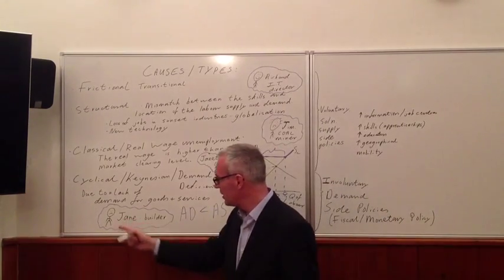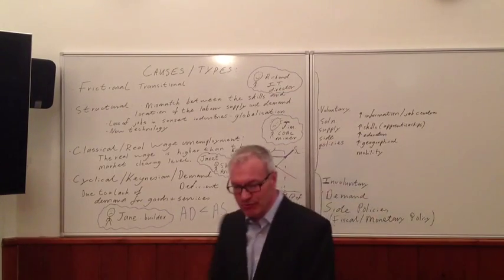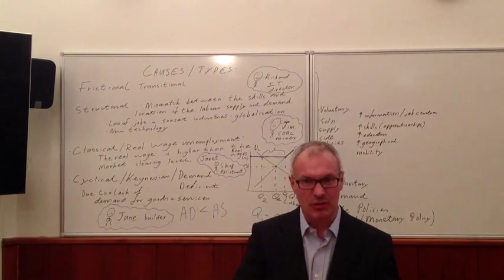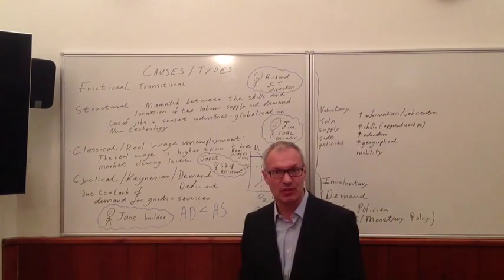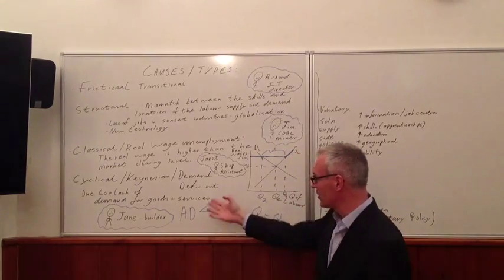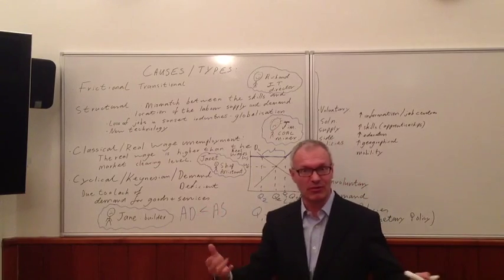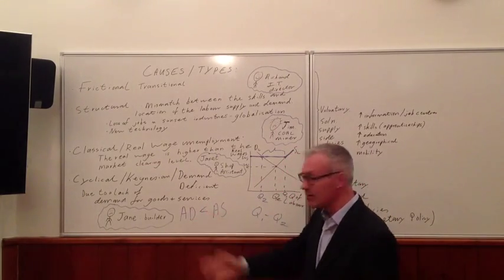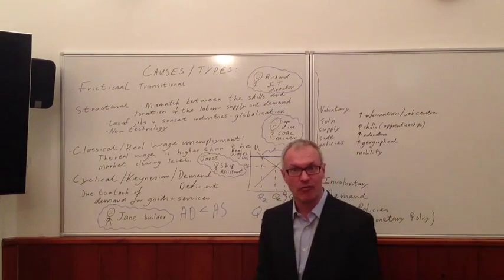For example, if Jane works in the building industry, one of the first areas to be cut back when there's a recession is indeed the building industry. The construction industry is highly cyclical and follows the cycle of the economy. Jane loses her job as a builder to no fault of her own, because aggregate demand has fallen and the demand for new buildings has fallen.